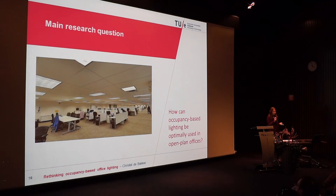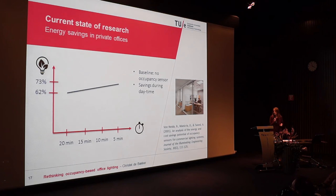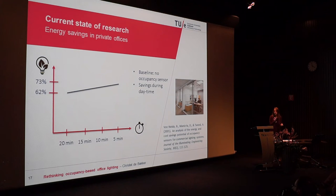This leads to my main research question: how can occupancy-based lighting be optimally used in open plan offices, so that those inefficient situations no longer occur? What's already been studied in this context has mainly been done in private offices, where it's easier to control lighting since there is just one individual worker. Researchers have investigated the effect of different time delay settings — the time after which lighting switches off after an occupant leaves — on energy savings. The shorter the time delay, the more energy is saved.